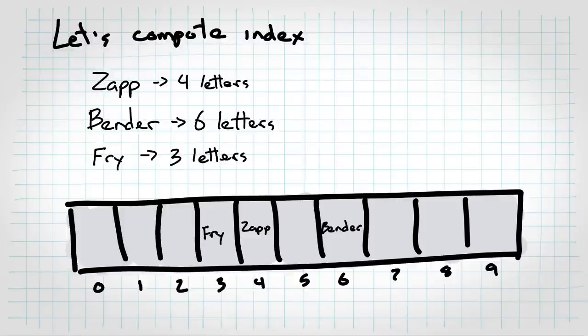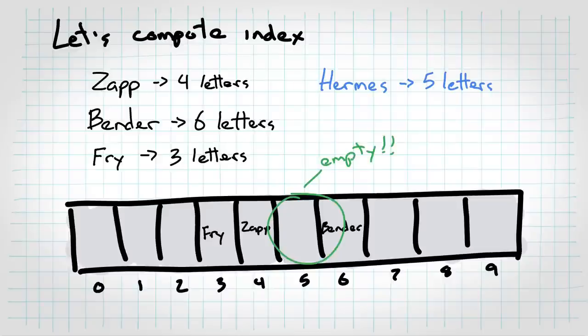And we can look up things really quickly. If I want to see if Hermes is in the table, well, the length is five. So I check that spot in the array, and boom, nothing there. Super fast and easy.